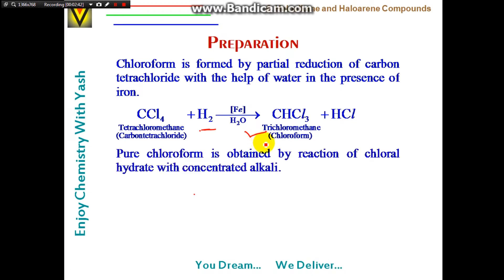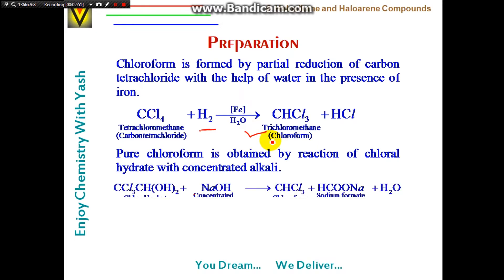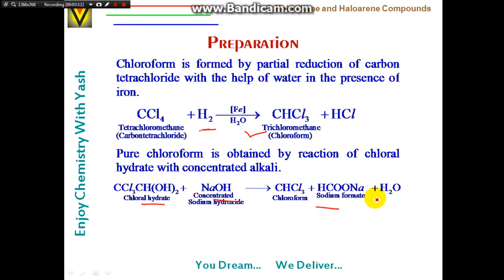Pure chloroform is obtained by the reaction of chloral hydrate (CCl₃CH(OH)₂) with concentrated NaOH, giving CHCl₃, sodium formate, and water. There are many stoichiometric coefficients in these reaction equations, so careful preparation is required.